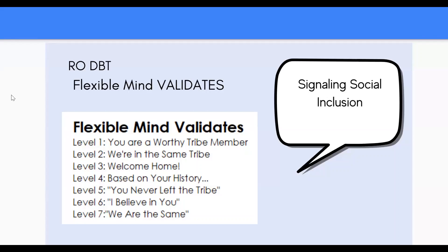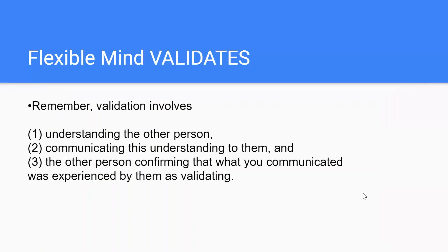Flexible Mind Validates — Signaling Social Inclusion. Remember, validation involves: 1. Understanding the other person, 2. Communicating this understanding to them, and 3. The other person confirming that what you communicated was experienced by them as validating.